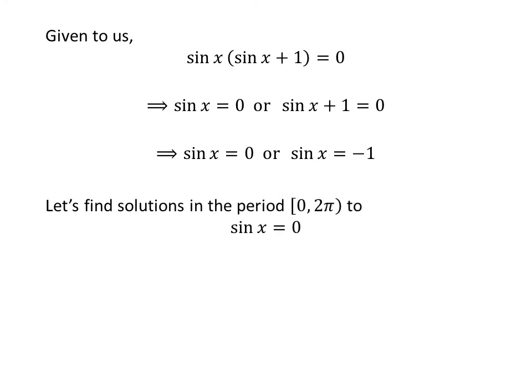As the sine function is a periodic function with a period of 2 times pi, let us first find the solution to the equation sine of x is equal to 0 in the period 0 to 2 times pi. We know the value of sine of 0 is 0 and the value of sine of pi is 0.